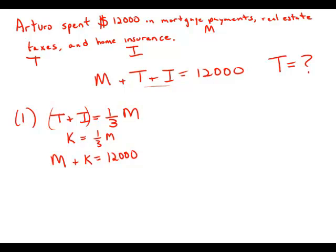So this is two equations with two unknowns. We'd be able to solve for M and solve for K. So then we'd know the actual numerical value of T plus I.